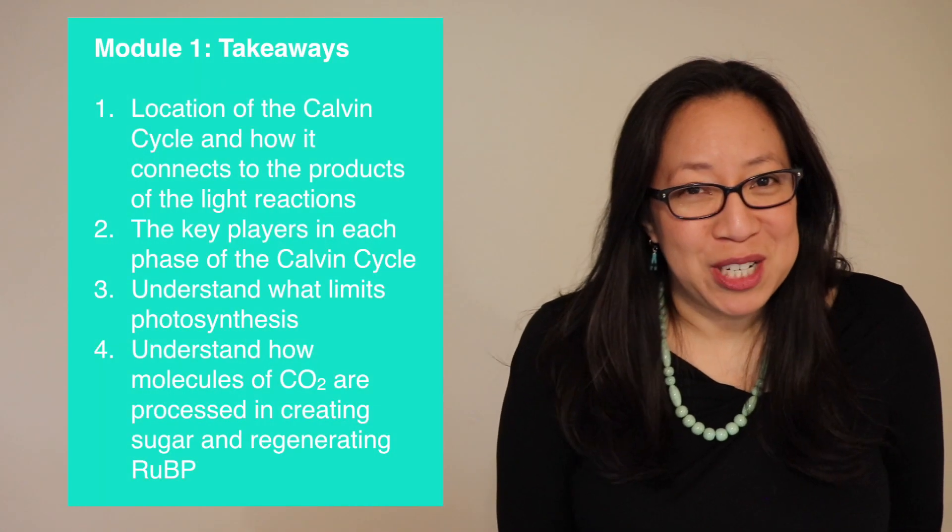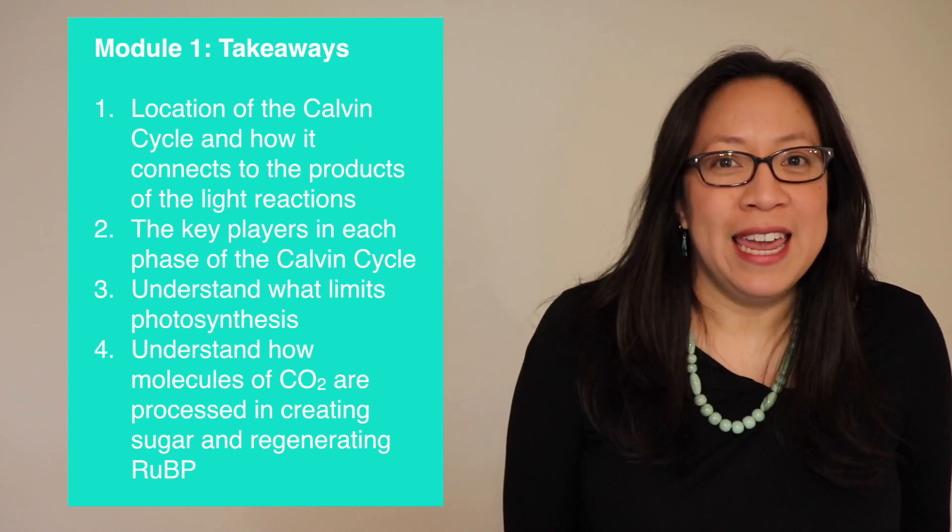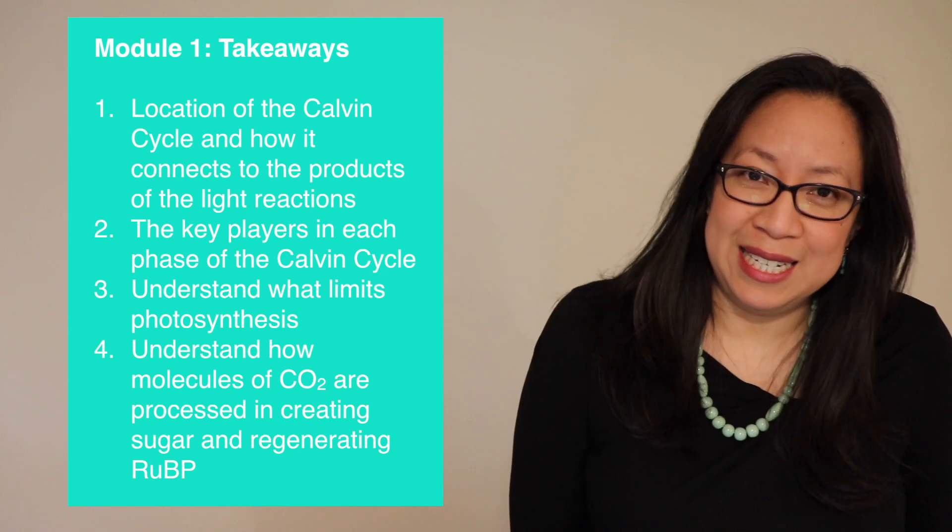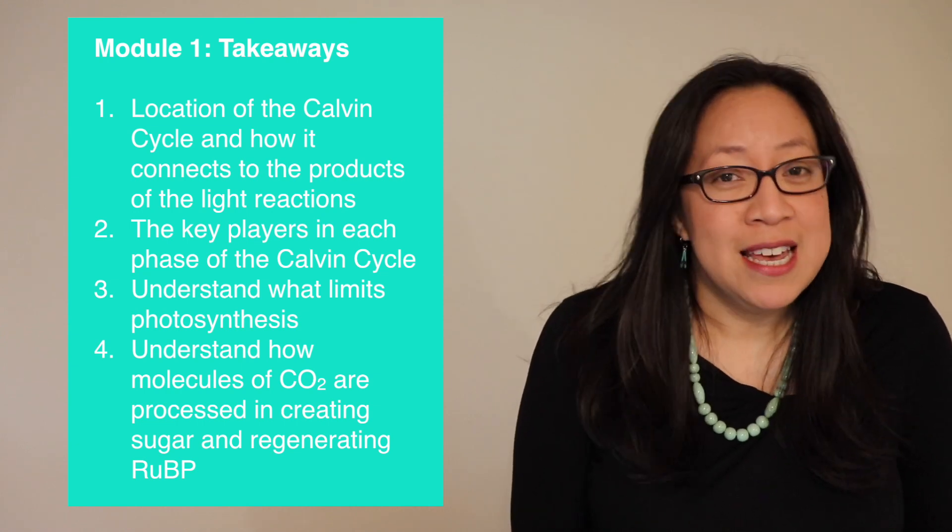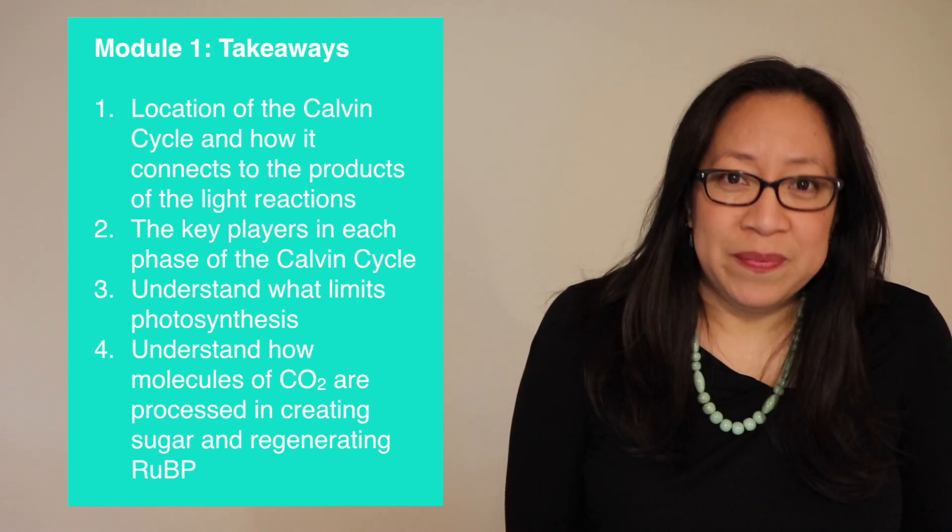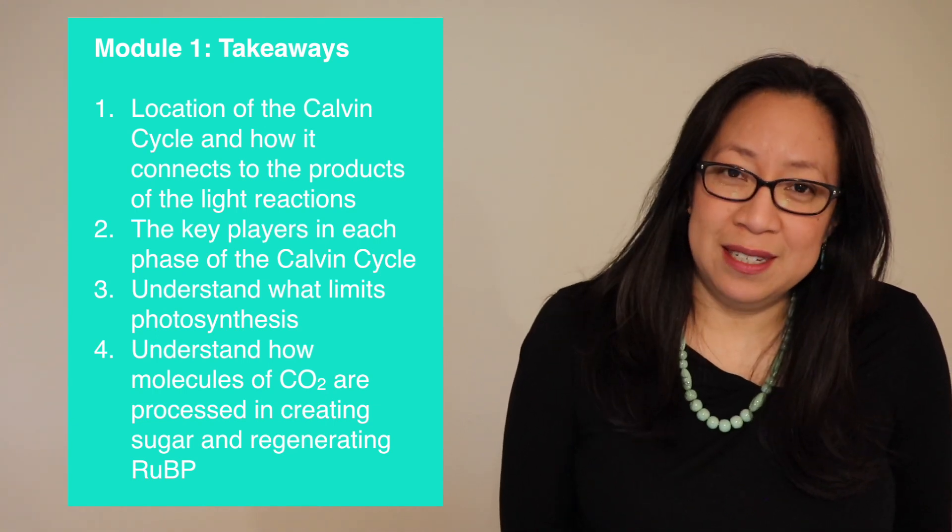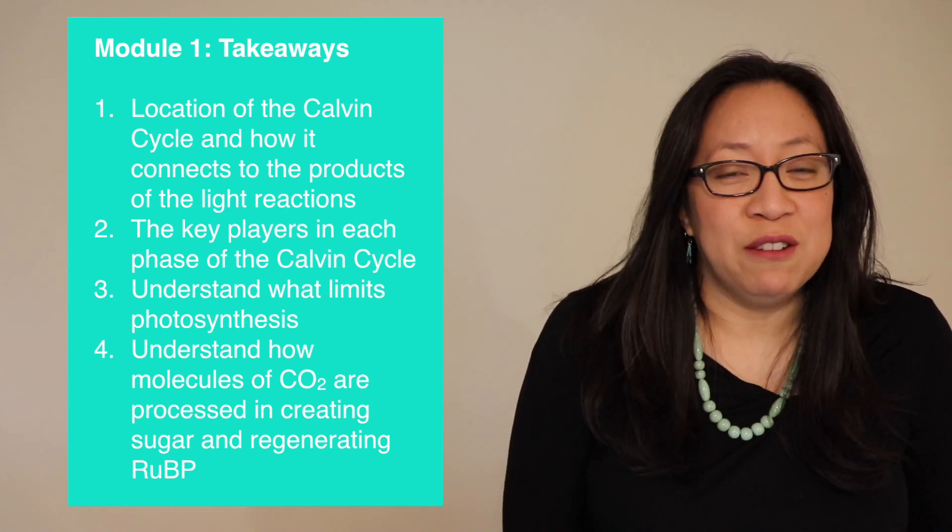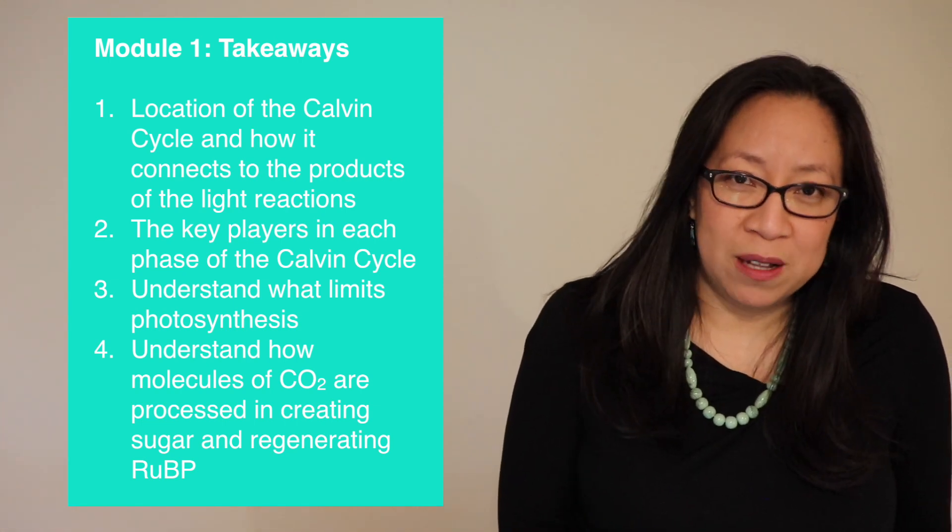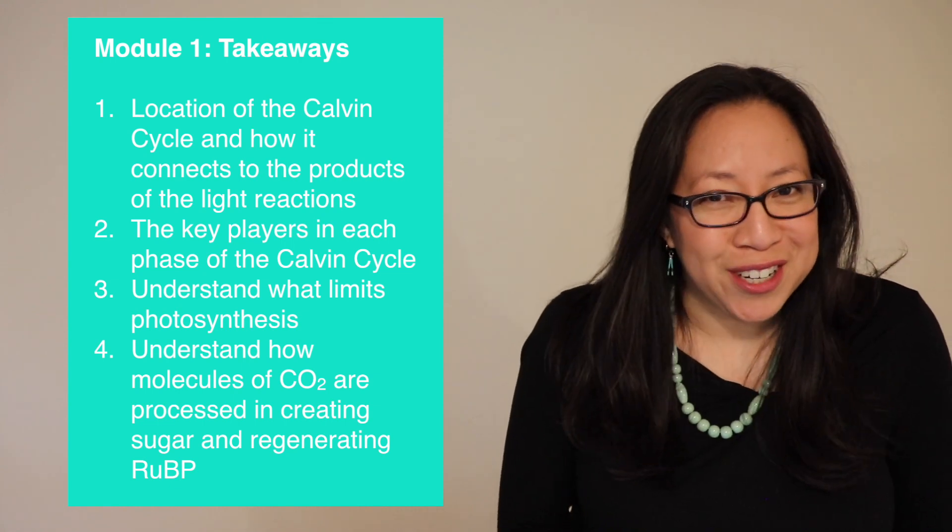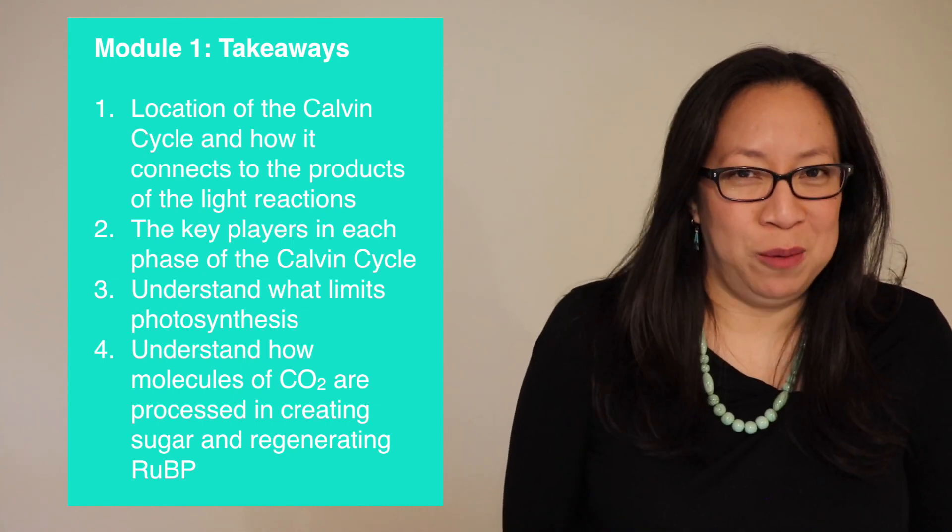That's it for Module 1 today. Your main takeaway should be, first, where is the Calvin cycle, and how is it connected to the products of the light reactions, in particular ATP and NADPH. Second, what happens in each phase of the Calvin cycle. Third, what limits photosynthesis, in particular during phase one of carboxylation. And finally, how are CO2 molecules processed as they go through the Calvin cycle to help create sugar, as well as regenerate RuBP.